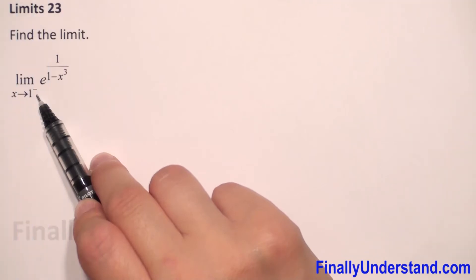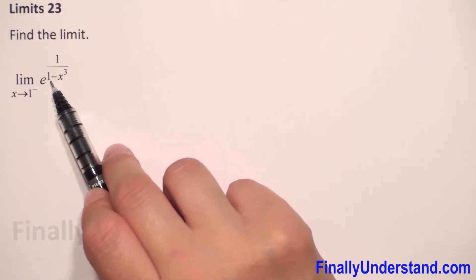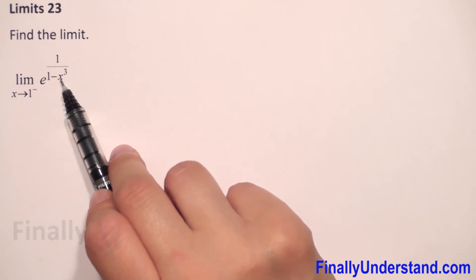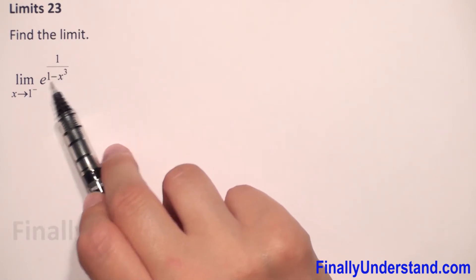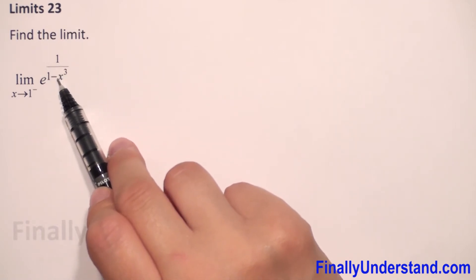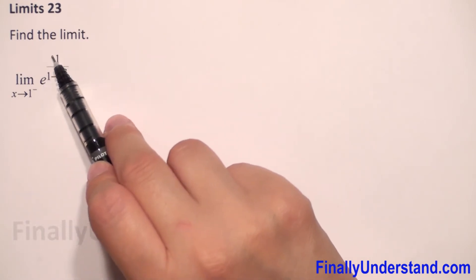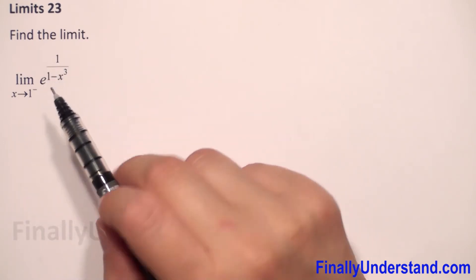We have to find the limit as x approaches one from the left. First, we check if we can replace x by one. That would be one minus one to the third power, which is one. One minus one is zero. We cannot have zero in the denominator, so we cannot do this direct substitution because we have e to this power.